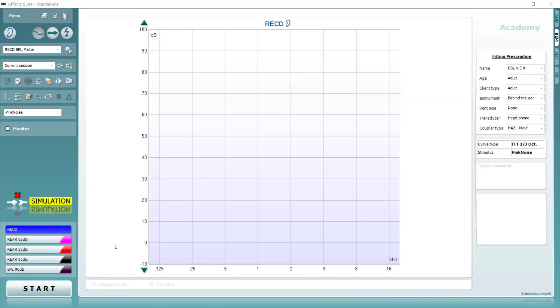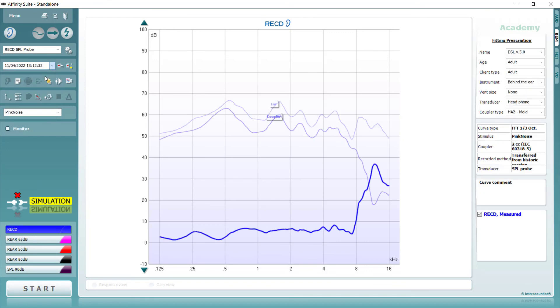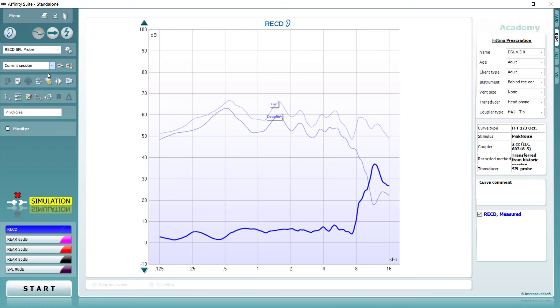Another option in these circumstances is to use a previously measured RECD for that patient. Although this won't be as current as a newly measured RECD, it is considered more accurate than using predicted RECD measures. To use a previous RECD, you can select the previous session where the measurement is saved, right-click on the measurement in question, and select Transfer to Current Session. If you then return to the current session, your previously measured RECD has been applied, ready for verification of the hearing aid.